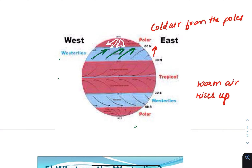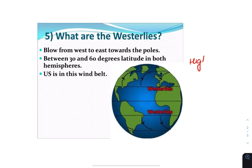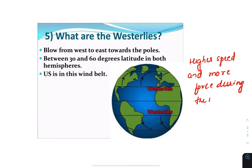This circulating air causes the air at lower altitudes in this higher latitudinal range to also move. The difference in speed between these two types of air is what is felt on the surface of the Earth.